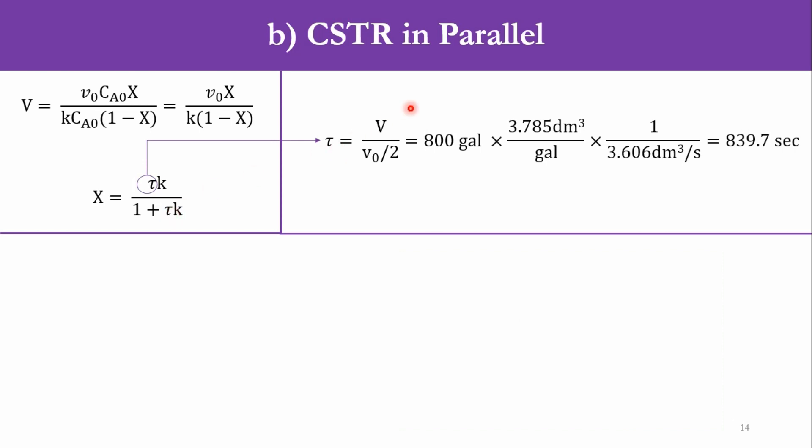Now that tau is equal to V over V0 actually. But now that volumetric flow rate is split into 2, so that will be V0 over 2 because the V0 is now split into 2 parallel reactors. Accordingly, we know V that is equal to 800 gallons. Once we convert gallon to cubic decimeter, it will be 3.785 cubic decimeter per gallon. And V0 total was 7.2 something which is now once we divided by 2, it will be 3.606 cubic decimeter per second.